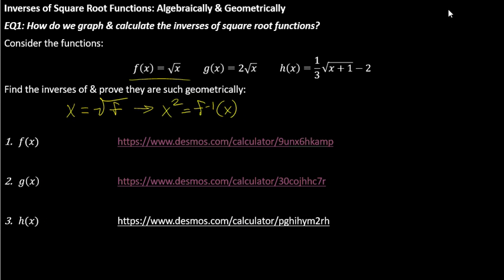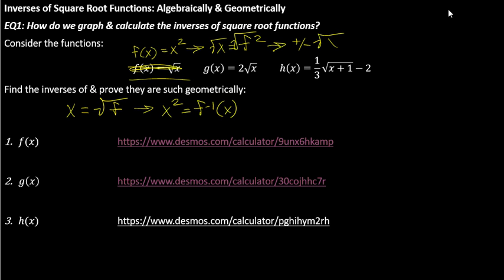Let's say f of x was x squared instead, and we were trying to find its inverse. We would have x equals f squared, then take the square root of both sides. Remember when we would solve quadratics and take the square root of both sides, there would always be two solutions — plus or minus. So we should have plus or minus the square root of x equals f inverse. That's why we're only seeing half of a parabola — when we go in the other direction, we don't have to have two solutions.